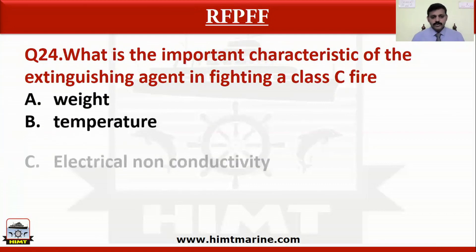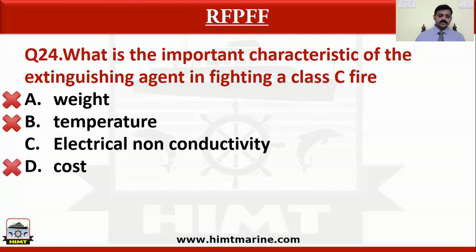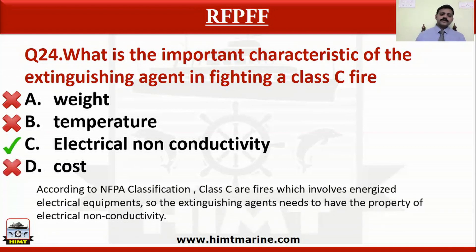Question number 24: What is the important characteristic of an extinguishing agent in fighting a class C fire? Option A weight, option B temperature, option C electrical non-conductivity, option D cost. The correct answer is electrical non-conductivity. According to NFPA classification, class C fires involve energized electrical equipment, so extinguishing agents need to have the property of electrical non-conductivity.